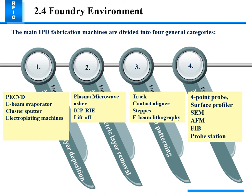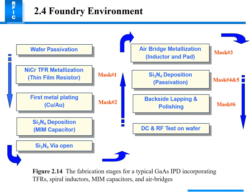The main IPD fabrication machines are divided into four categories: PECVD, plasma microwave track, and 4.4 eV evaporator cluster; sputter and electroplating machines. Also used are microwave ICP-RIE, lift-off track, contact aligner, e-beam lithography, surface profilometer, AFM, FIB, and probe station.